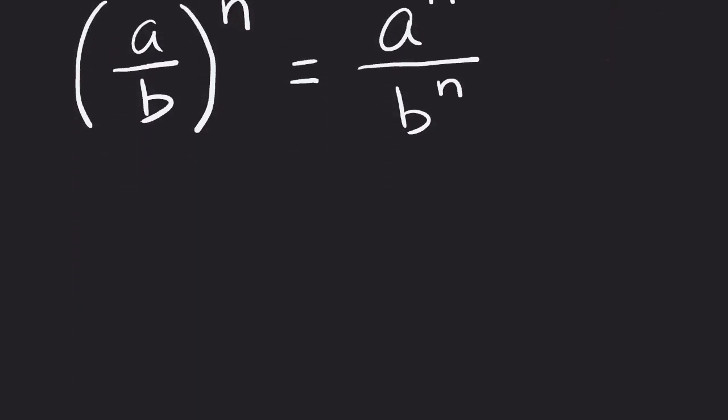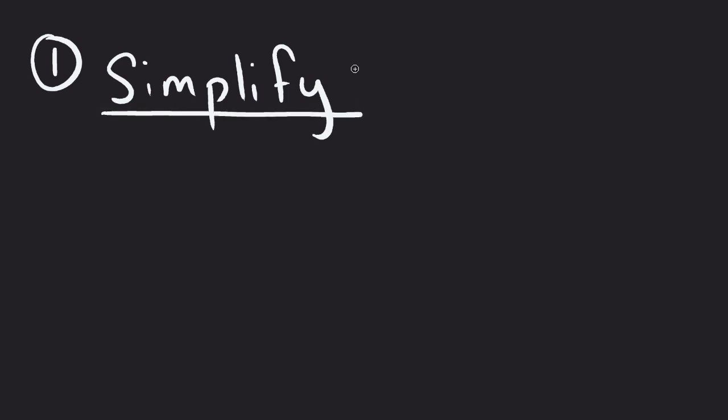Let's look at an example of this. So what if we had something that said simplify, and I gave you the quotient of X over 3 squared.